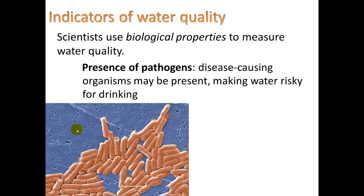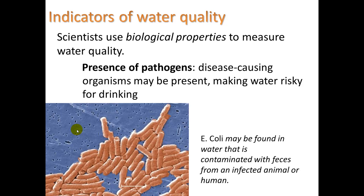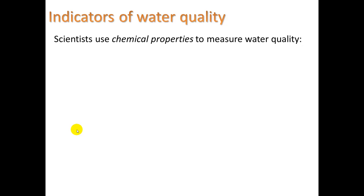To ensure safe and healthy water, we use indicators of water quality in three categories: biological, chemical, and physical properties. For biological properties, scientists look for the presence of pathogens — disease-causing organisms that make water risky for drinking. For example, E. coli may be found in water contaminated with feces from an infected animal or human, and it can be very deadly.